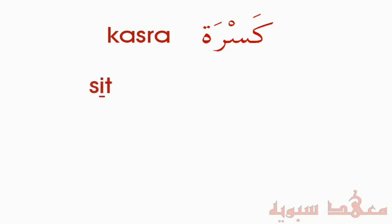Let's get to the Kasra. As shown, the Kasra is a line at the bottom of the letter. The sound it has is like the word 'sit' — it's like the I in 'sit.' So if I transliterate that into Arabic, you have the Seen with the Kasra — 'Si' — and then the Ta, giving 'Sit.'